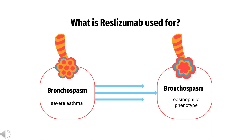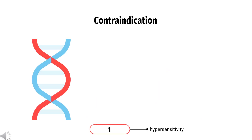What is Reslizumab used to treat? Reslizumab is indicated for the add-on maintenance treatment of patients with severe asthma aged 18 years and older with an eosinophilic phenotype.